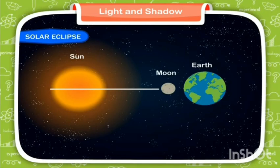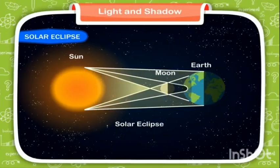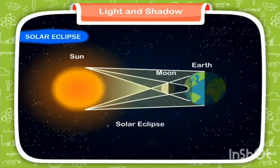Solar eclipse is that situation in which the Sun, the Moon, and the Earth come in a straight line with the Moon in the middle. The shadow of the Moon falls on some part of the Earth. The solar eclipse can be seen from this area on the Earth.